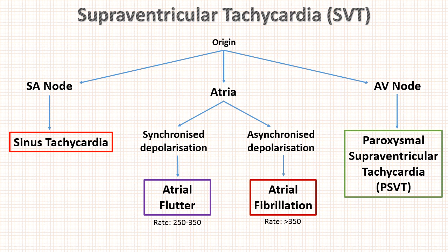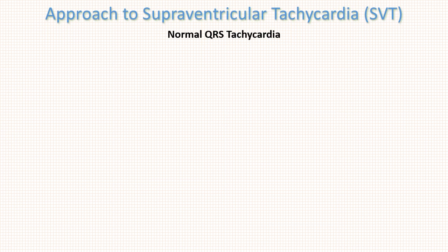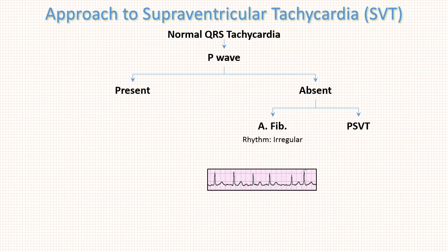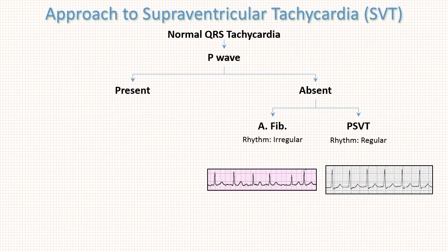Now let us discuss the approach to SVT and how to identify each type on ECG. As we already discussed, QRS complex is narrow in SVT. The next step is to check for P waves, whether they are present or absent. If P waves are absent, there are two possibilities: atrial fibrillation and PSVT. To differentiate them, remember that rhythm is irregular in atrial fibrillation and regular in PSVT.